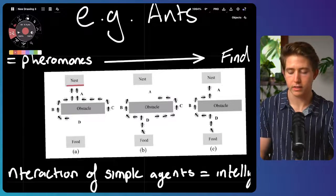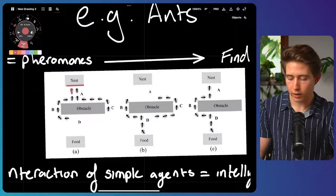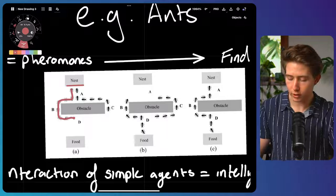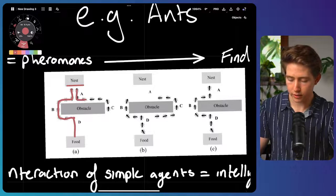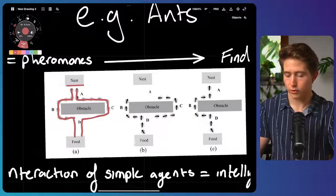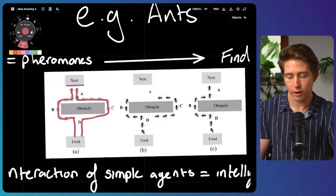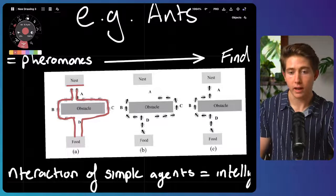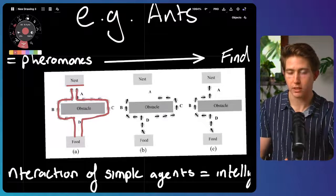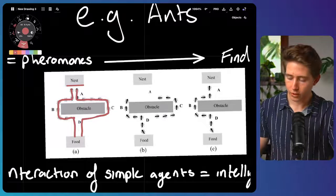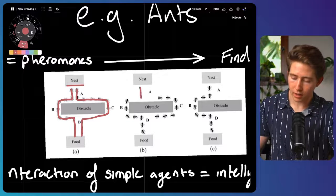And one very simple example of this is when ants are trying to find food. So if we have an ant nest up here, the ants will randomly go out and try and find food. And they'll go around various obstacles and eventually find themselves different food sources. Once they've found a food source, they'll then go back the way they came and release pheromones as they return to the nest. Which tells other ants that there's food in that direction and causes them to follow that path.